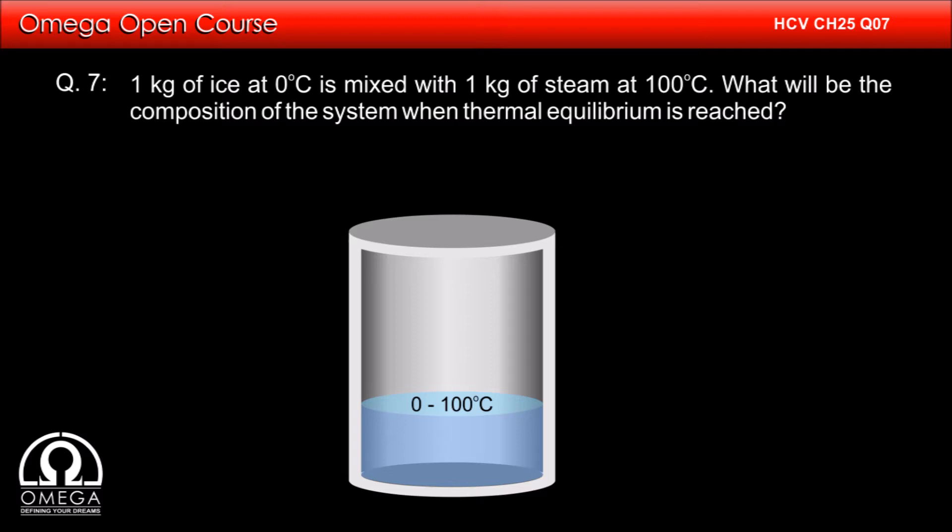The third possibility is that all the steam is condensed and all the ice is melted. The final composition in this case will contain only water and its temperature can be anywhere between 0 degree celsius to 100 degree celsius.